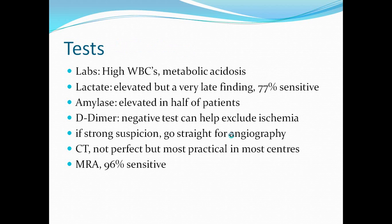Tests you can order: labs usually show a high white blood cell count and metabolic acidosis. Lactate can be elevated, but it's a very late finding — you have to start having bowel injury or infarction for this to happen; it is 77% sensitive. Amylase can be elevated in about half of patients. D-dimer is not very useful for ruling it out. If there is strong suspicion, go straight for angiography. CT angiography is the most practical route in most centers, and MR angiography is 96% sensitive.